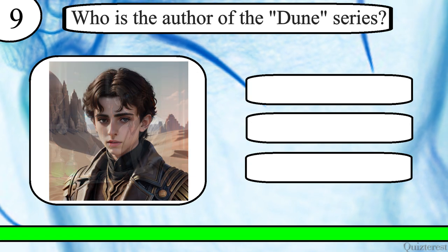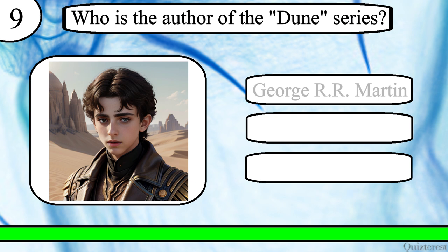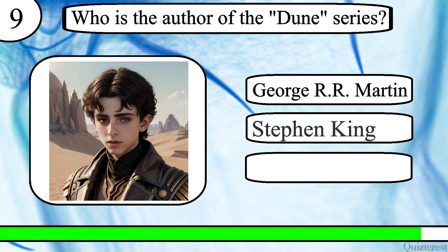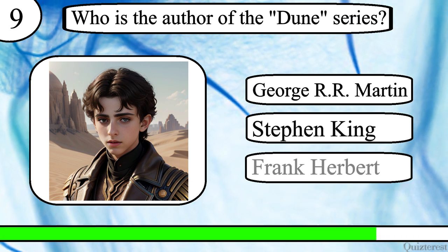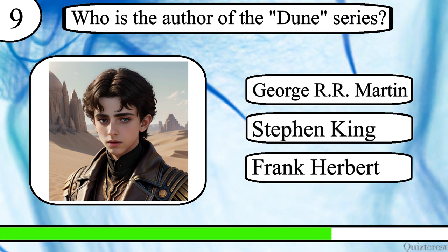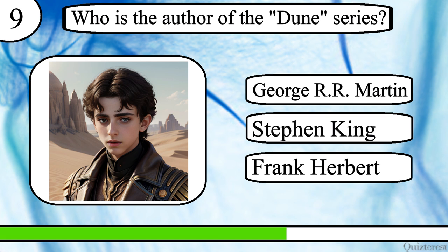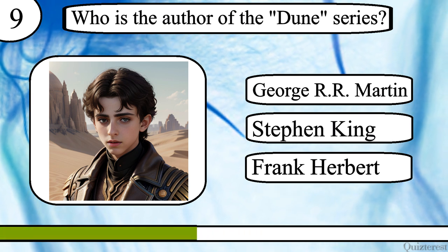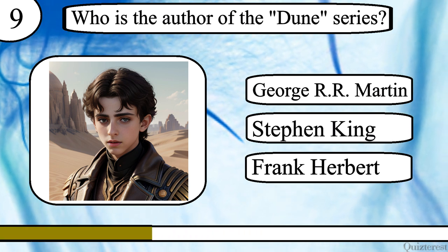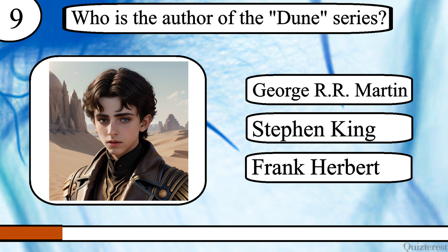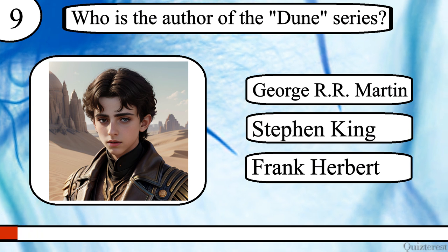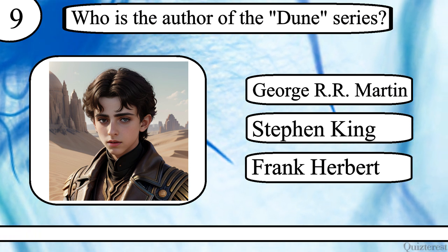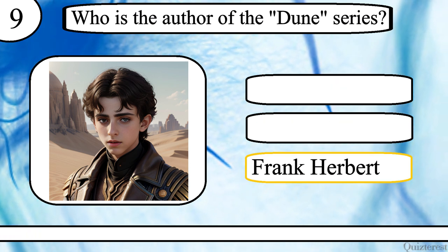Question 9. Who is the author of the Dune series? George R.R. Martin, Stephen King or Frank Herbert? The correct answer is Frank Herbert.